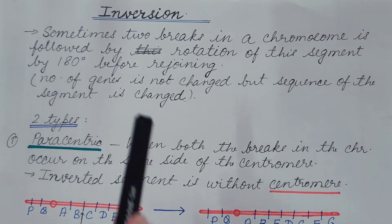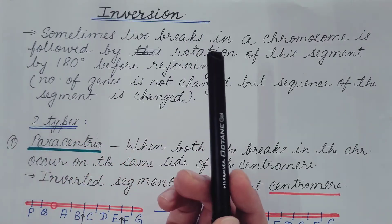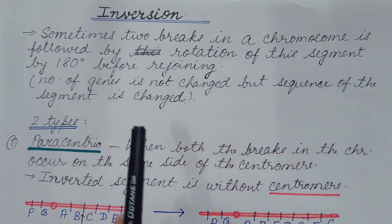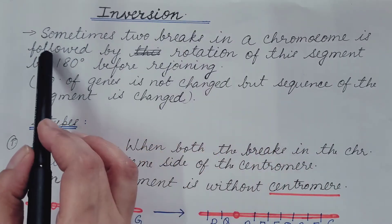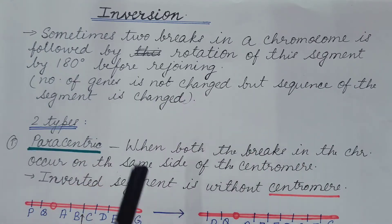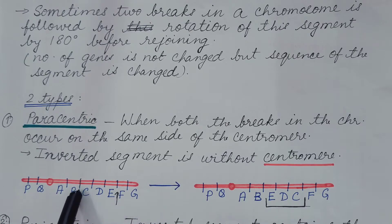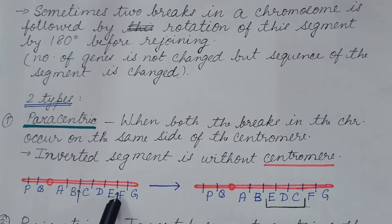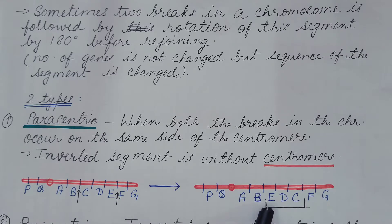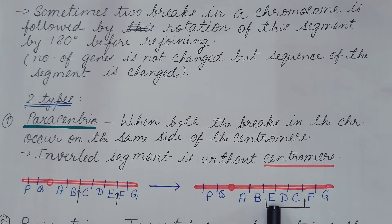Today we are going to discuss about inversion. So what is inversion? Sometimes two breaks occur in a chromosome and this break is followed by the rotation of the segment by 180 degrees before rejoining. The segment had the sequence CDE, but after rotation it becomes EDC.